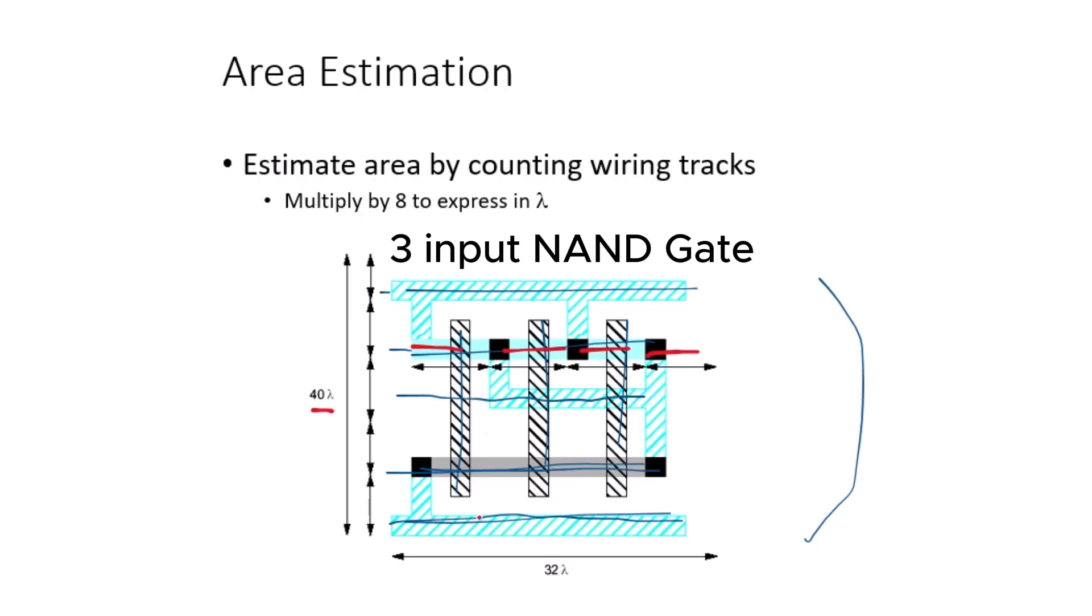So there are a total of four wiring tracks. That means 4 times 8 lambda, which gives us a total of 32 lambda. This is how you estimate an area of a given layout or your designed layout so that we can know approximately how much space your circuit takes up. By carefully planning the wiring tracks and using efficient layout techniques, we can create complex logic gates like NAND and NOR while minimizing area and ensuring proper functionality.